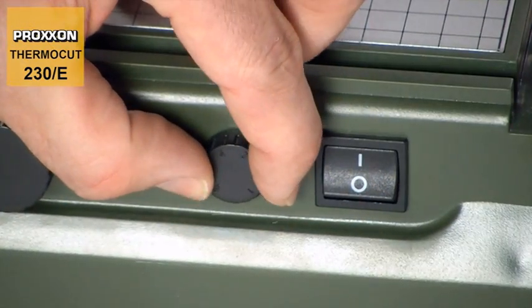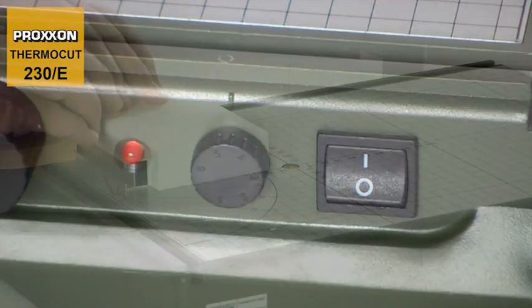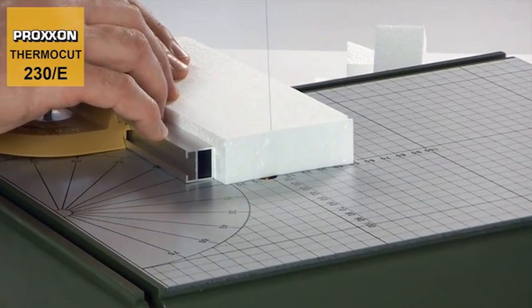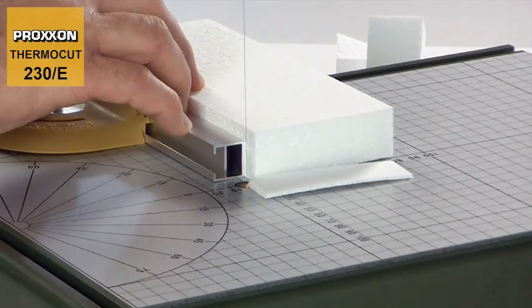The wire temperature can be controlled within the range from 100 to 200 degrees Celsius, meaning you can rapidly find the temperature best suited to each material and thickness, and the workpiece can then be cut with the application of moderate pressure.